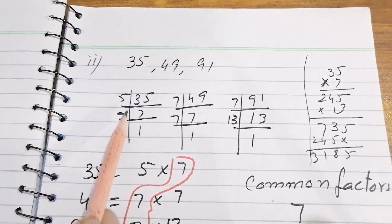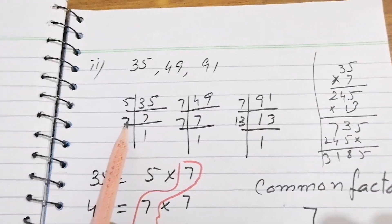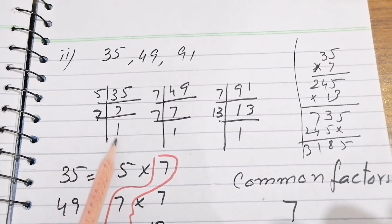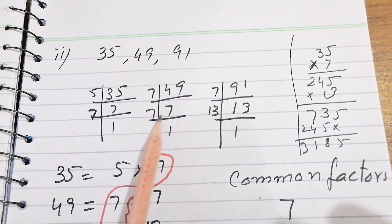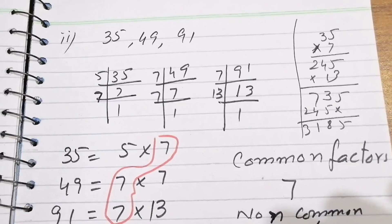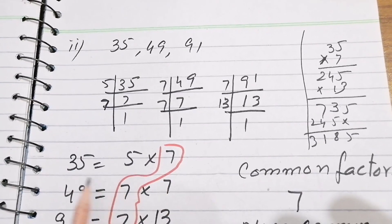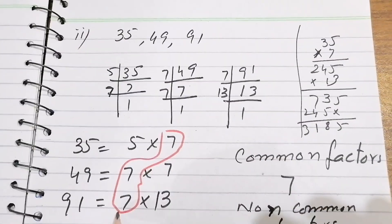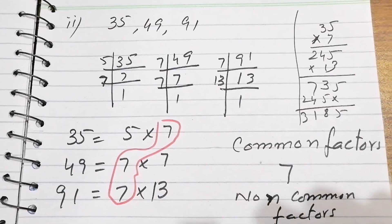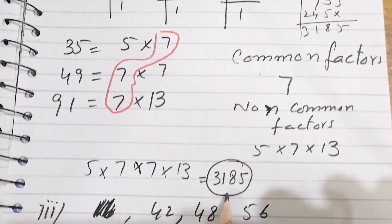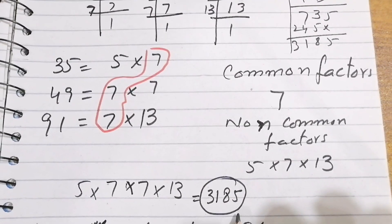The second part is 35, 49, and 91. Taking prime factors: 35 = 5×7, 49 = 7×7, 91 = 7×13. We write these prime factors in sequence, then take the common factor — 7 is common — and the non-common numbers are 5, 7, and 13. Multiplying all together, we get 3185 as the LCM.